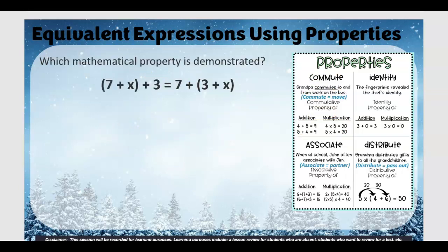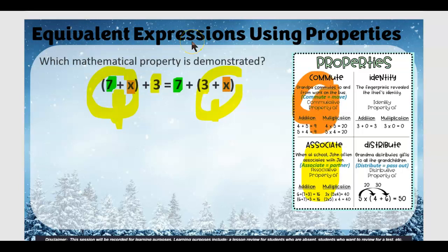Try this one — pause the video. What's being changed here? The order is being changed — seven, x. But wait, who they're associating with is also different: here seven and x are associated, here three and x. So there's definitely some associative property, but it also looks like they did some commuting as well. It's kind of a tough one — if I had to pick one, I would go with associative because they're moving the parentheses and parentheses are on both sides.